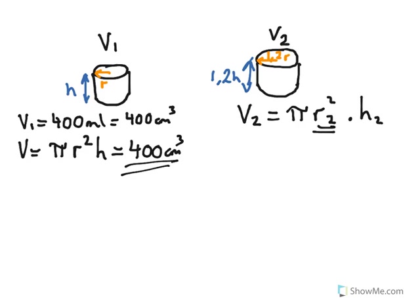But we do know something about the radius and the height of tin 2. What we know is that the radius of the second tin is 1.2 times as large as the radius of the first tin, which we've called r. So we know that the second radius is 20% larger than the radius of the first tin. We also know that the height of the second tin is 1.2 times larger than the height of the first tin. So we now have a value for r2 and h2 in terms of the first tin.